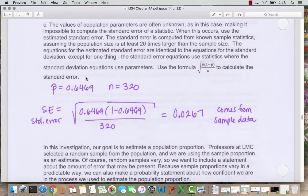n is still the total number in the survey. So p-hat is 0.6469, n is 320. We can work through this calculation for the standard error. We multiply, divide, and then square root at the end. And we get 0.0267 as our standard error.